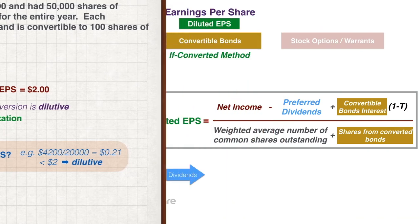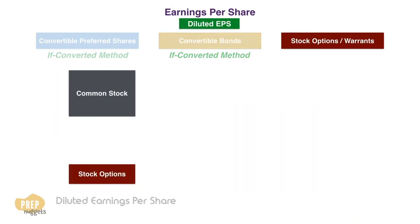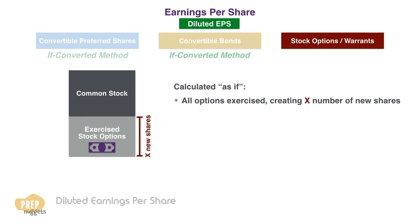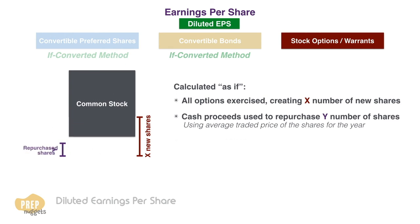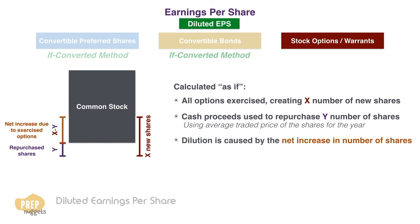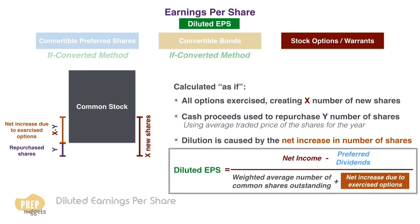The third kind of potentially dilutive security is stock options. In this illustration, the capital structure is made up of common stocks and stock options. Diluted EPS is calculated as if all the options had been exercised, meaning all options are converted into new shares. The company uses the cash proceeds from the exercise to repurchase as much common stock as possible at the average market price during the period. This gives the net increase in common stock, and the dilution is caused by this net increase. The weighted average shares for diluted EPS is increased by shares issued upon exercise minus shares repurchased with the proceeds — this is the treasury stock method.